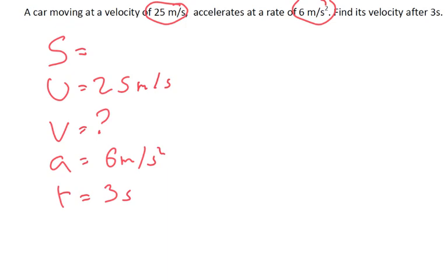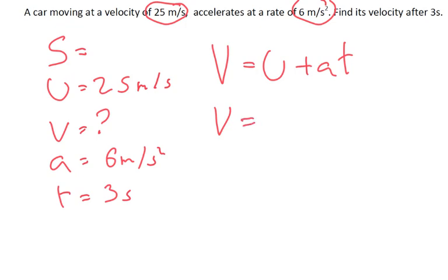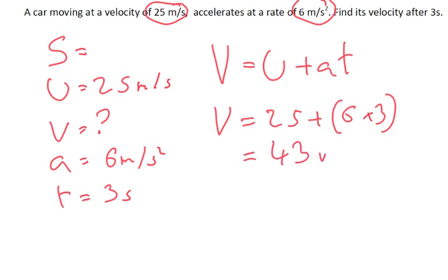So we've got u, v, a, and t — they're all part of this problem. We're going to use the equation v equals u plus at. Putting the numbers in: u was 25, and then a was 6 times by the time, which is 3 seconds. So 6 times 3 gives us 18, plus the original 25. The final velocity is 43 meters per second.